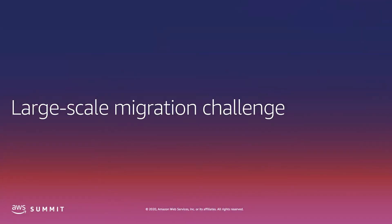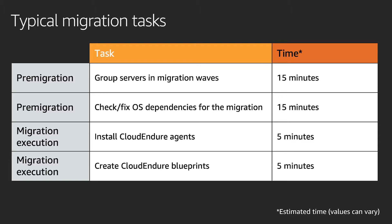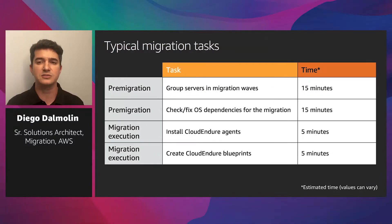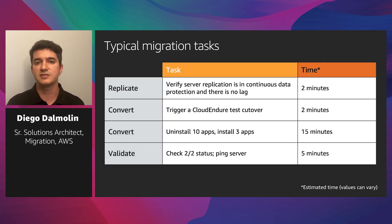Now let's talk about the challenges you could face during a large-scale migration project. For a typical migration, there are steps you would have to execute, and you may not be sure about the right order or what unexpected delays you could face. For example, you would have to group servers into migration waves, check or fix operating system dependencies, install CloudEndure agents, create CloudEndure blueprints, check if servers are replicating as expected with no lag, test your migration, and eventually remove unused drivers or install software such as a new monitoring tool.